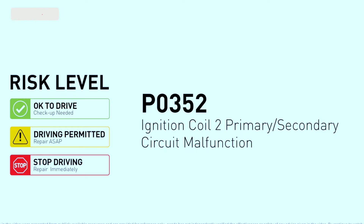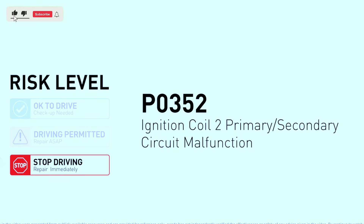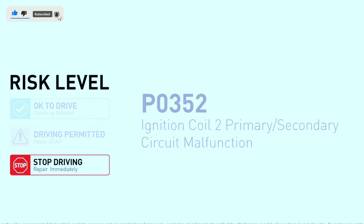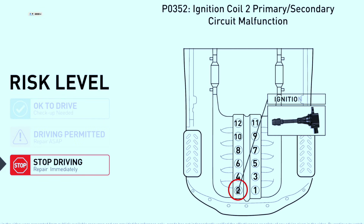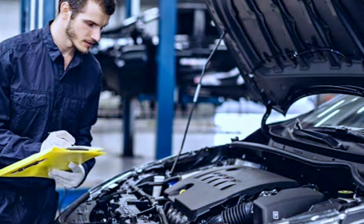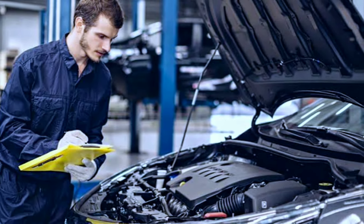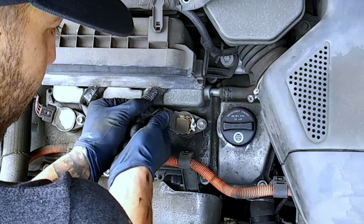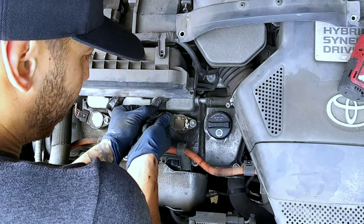First things first, let's understand what the P0352 code means. It indicates a malfunction in the ignition coil for cylinder B. This can lead to engine misfires, rough idling, and a decrease in overall performance. But don't worry, we're here to help you get your car back in top shape.